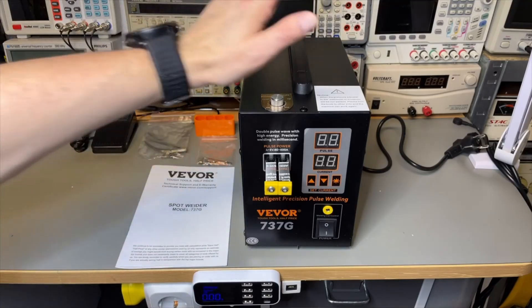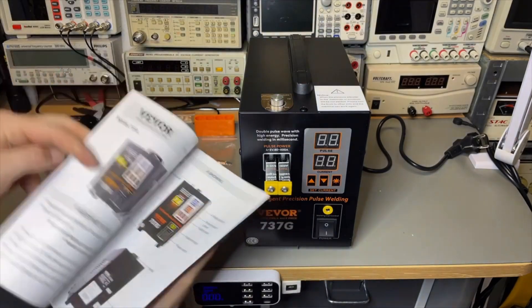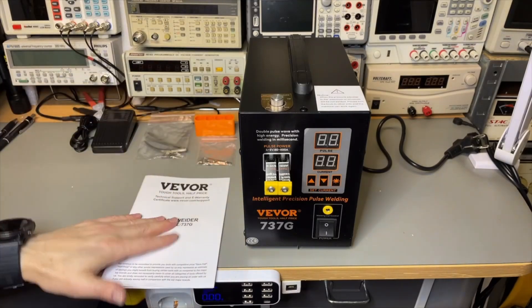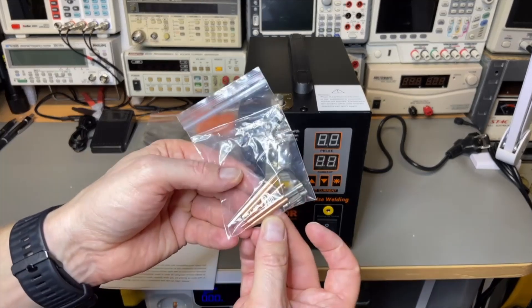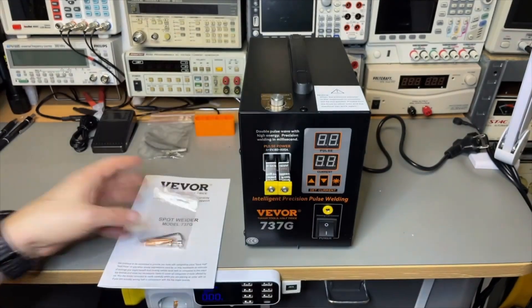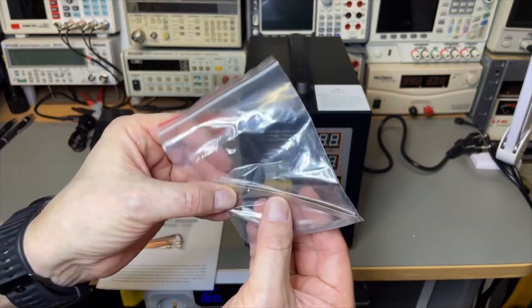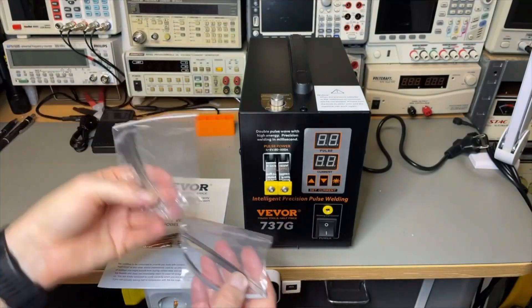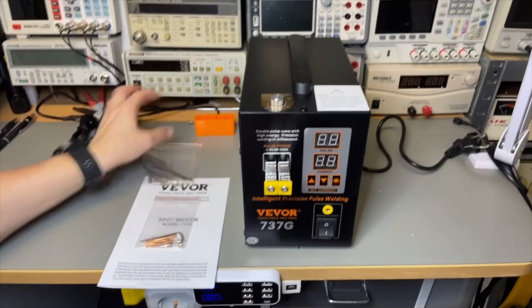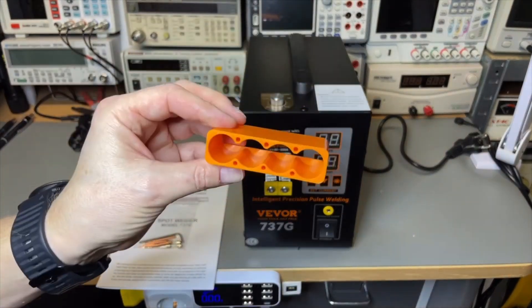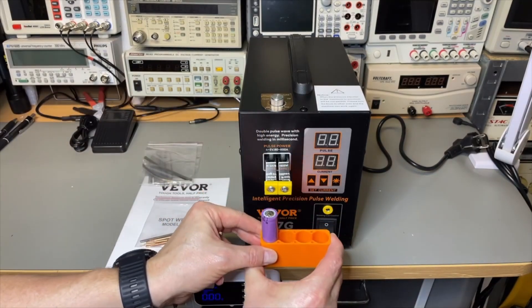So what have we got? We have the welder, a manual that explains step by step how to set it up, very well done. We have spare fuses, tips and even a set of spare tips that we need to screw in here. We have welding strips to put on the batteries, two sets of them, one maybe thicker than the other. And we have a battery holder to hold the cells for easier welding.